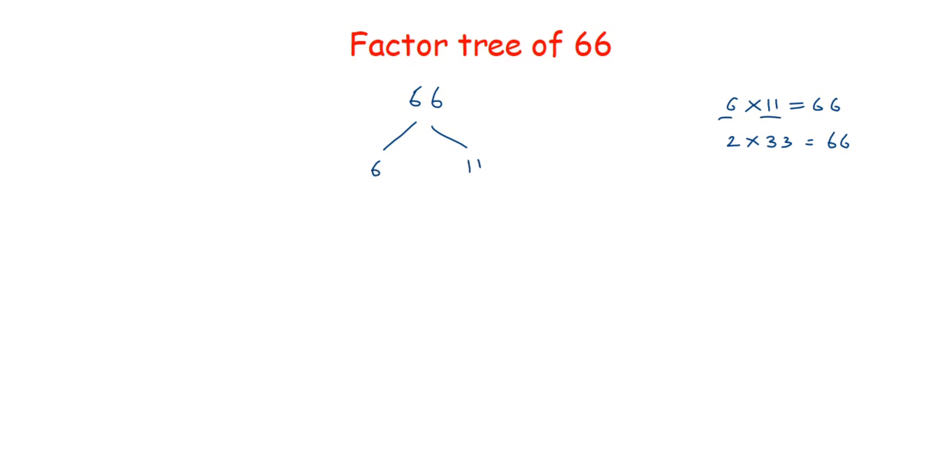Now after this, you have to check if any of these numbers is a prime number or composite. 11 is a prime number, so if it is a prime number, you have to circle that number. Why we're doing it? Because prime numbers cannot be split further, so we'll stop. The branch will stop there.